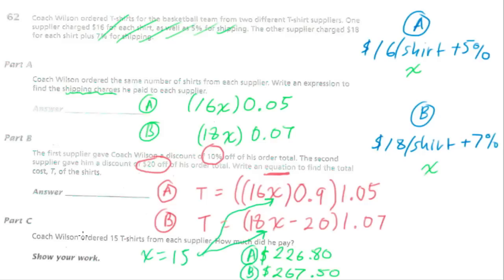The question asks how much did he pay in total, and since there's one answer line, we believe we should add both amounts together: $267.50 plus $226.80 gives a total of $494.30. That is our total for question 62, part C.